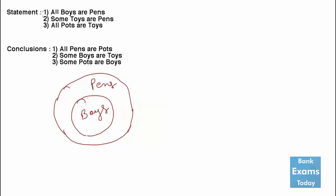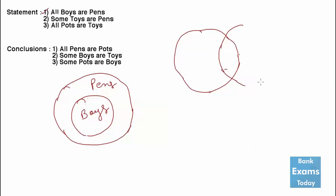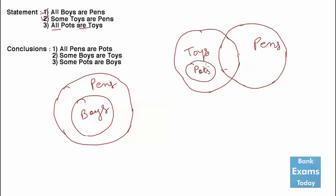Now the second statement: some toys are pens. A part of toys overlaps with pens. And the third statement: all pots are toys. There is a possibility that the circle for pots can be here, or here, or somewhere else within toys — so these are our possibilities.